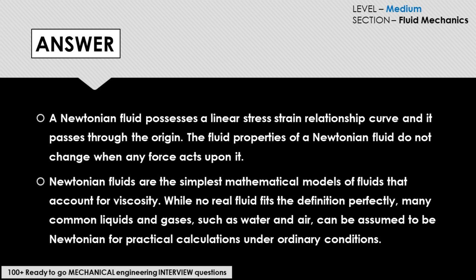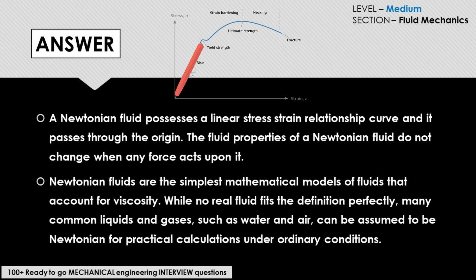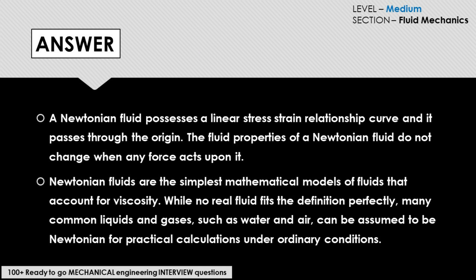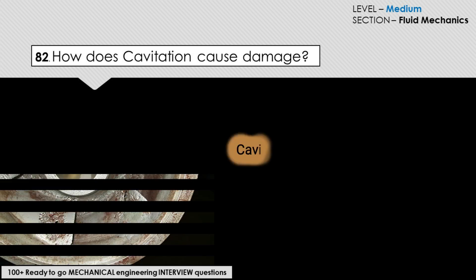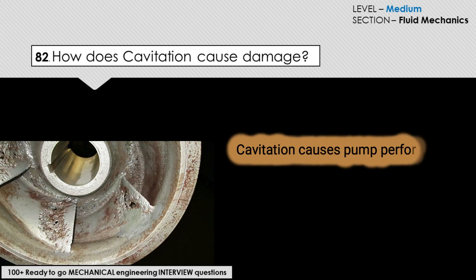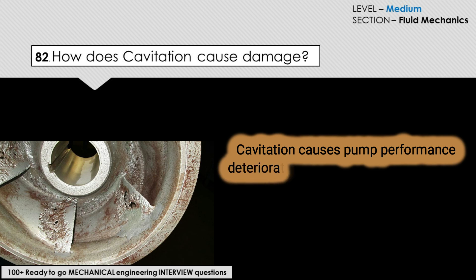The answer to this question: a Newtonian fluid possesses a linear stress-strain relationship and it passes through the origin. The fluid properties of a Newtonian fluid do not change when any force acts upon it. Newtonian fluids are the simplest mathematical models of fluids that account for viscosity.